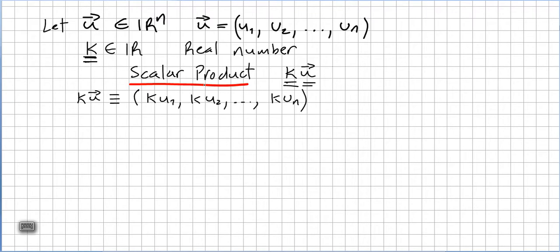So this is the scalar product — a scalar, a number, times the vector. How is it defined? We define the scalar product as: we multiply the scalar by each of the components.